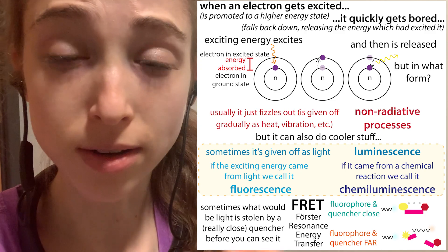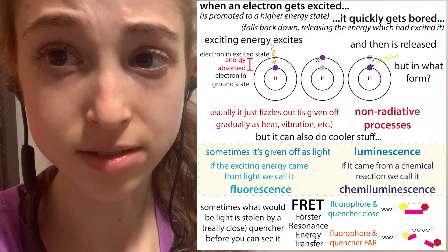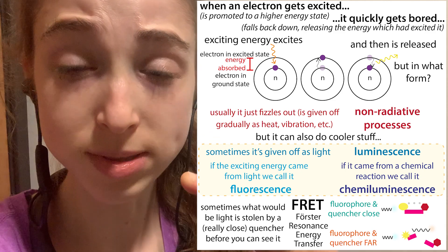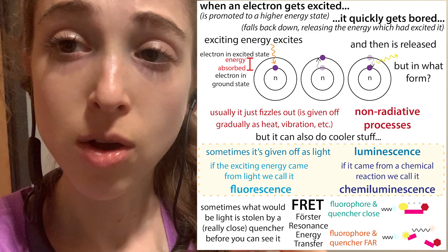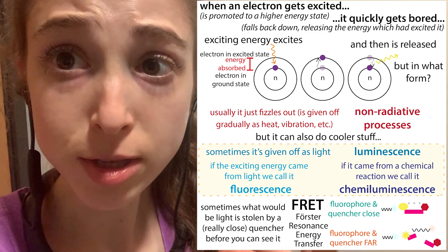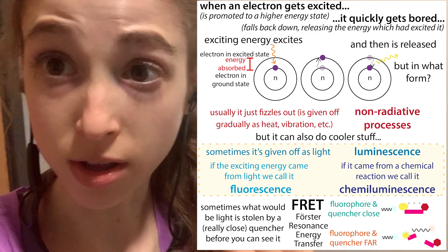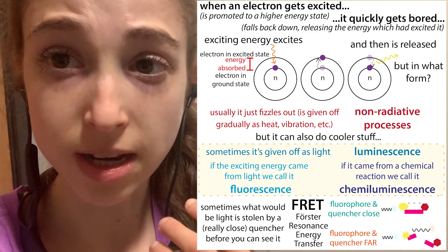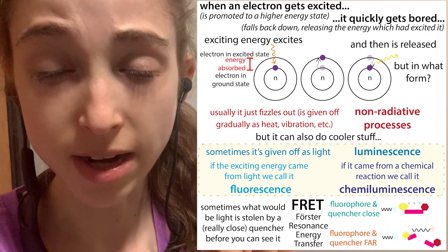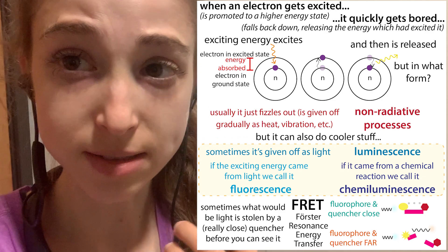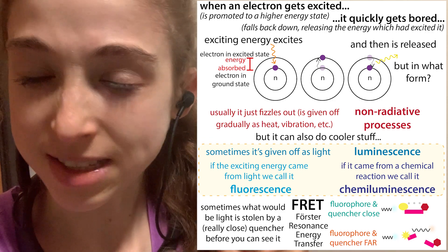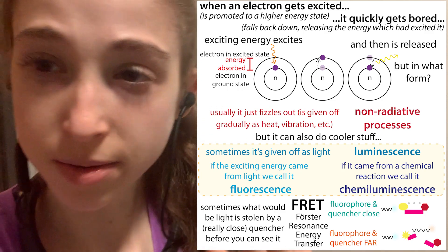This energy can be acquired in the form of light, as in the case of fluorescence, where the molecule absorbs light and then gives off light. With chemiluminescence, the molecule absorbs energy through a chemical reaction.